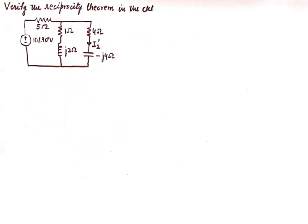Now let us solve a numerical based upon Reciprocity Theorem in AC networks. We need to verify the Reciprocity Theorem in the given circuit. In this circuit a voltage source is placed in one branch and current I2' is specified in another branch. It is automatically implied that we take this voltage source and place it in the branch where I2' is flowing, then find the current in the branch where the voltage source was originally placed, and verify that the two currents are equivalent.